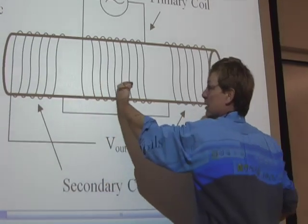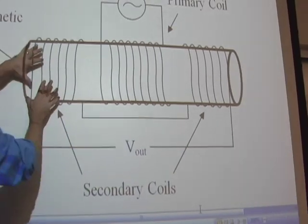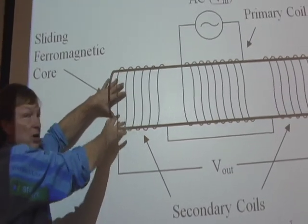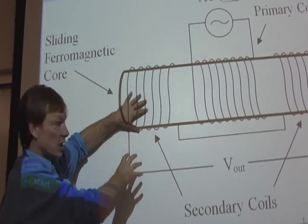If I slide the core this way, now I'm getting a smaller current. I'm receiving less of that magnetic flux and converting it into current than on the other side. And so it's going to have a lower voltage on this side.